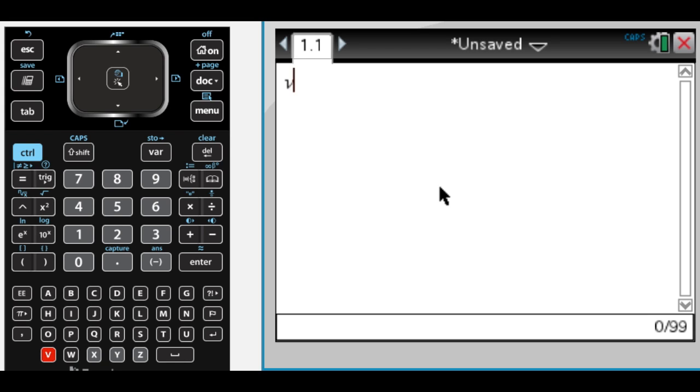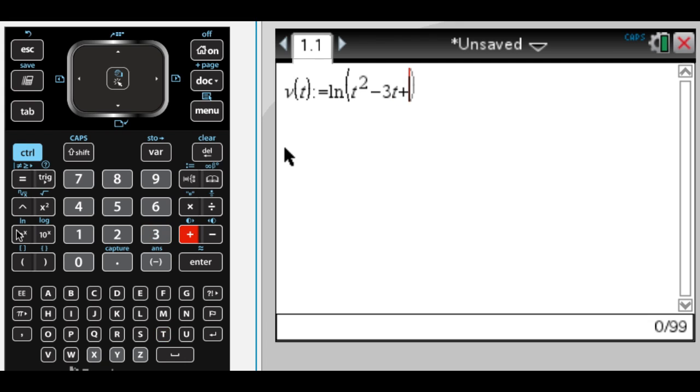I'm given a function, so I'm going to define it. v of t equals, or set equal to, which is colon equals, natural log of t squared minus 3t plus 3.